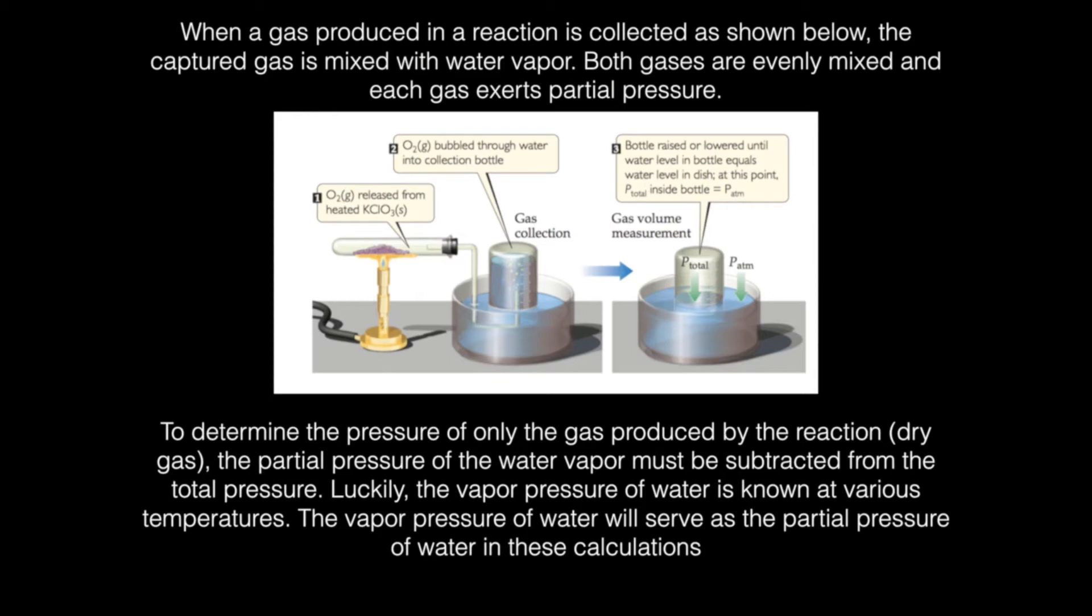Now luckily the vapor pressure of water, we know it for various temperatures and you have a chart right below this diagram that shows you all the different vapor pressures at specific temperatures. And so these problems are very easy to use simply because you just have to take the total pressure, subtract the partial pressure of the water vapor, and there's your pressure of gas that you were concerned with in the first place.